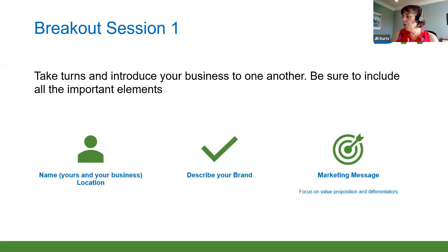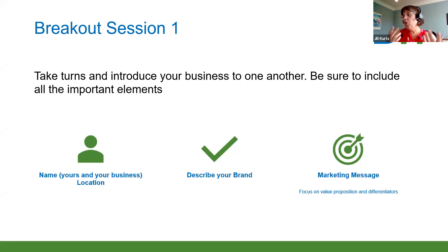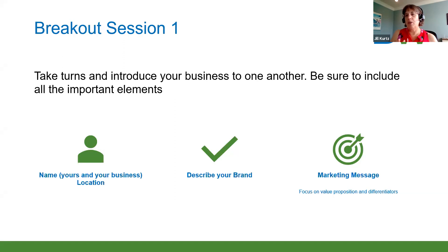We're going to do our first breakout now, with about four people to a room. I'd like you to take turns introducing yourself using your elevator pitch or brand message. Make sure you focus on the key elements: the NAP — your name, your service area — describe your brand, and share your value proposition and differentiators. A great elevator speech is about 30 to 45 seconds. When you get the prompt on your screen to join the room, please click the blue button and that'll put you into your breakout room.